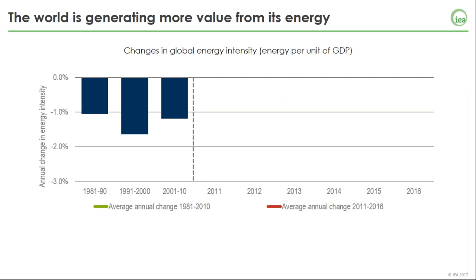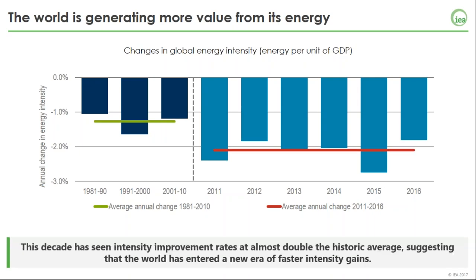I'm going to start with some high-level trends and indicators from chapter one of our Energy Efficiency 2017 report. The first indicator we look at is changes in global energy intensity — our high-level global indicator of how much more efficient the world has become. Before 2010, energy intensity improved at an average rate of around 1.3% globally. Since 2010, we've seen an increase in that rate to around 2.1% average annual improvement — a significant step up. In 2016, there was a slight drop from the very substantial improvement seen in 2015, but still in line with the overall trend.